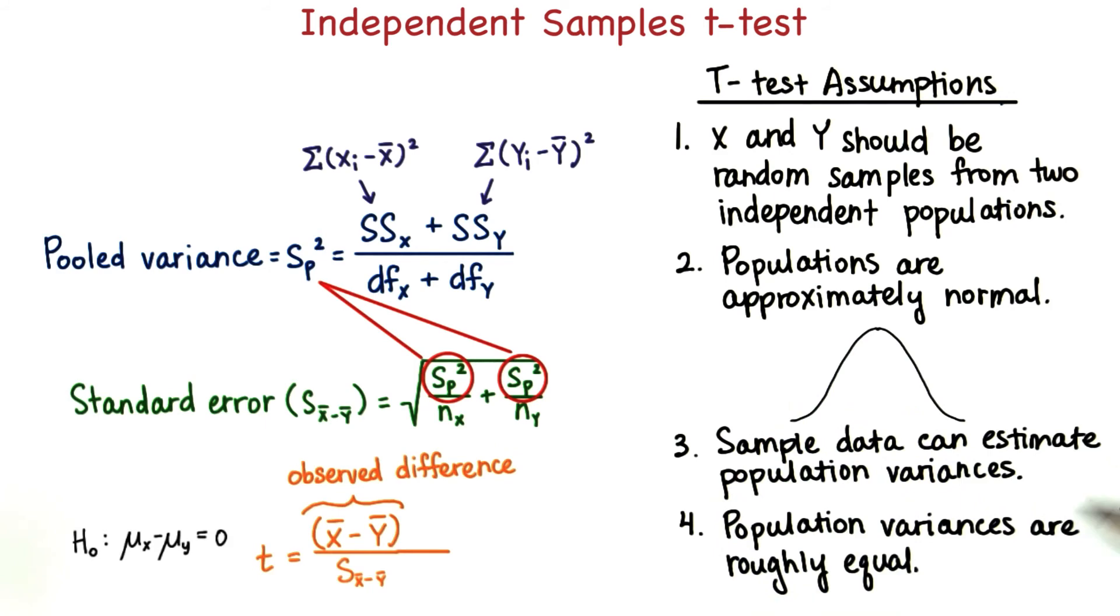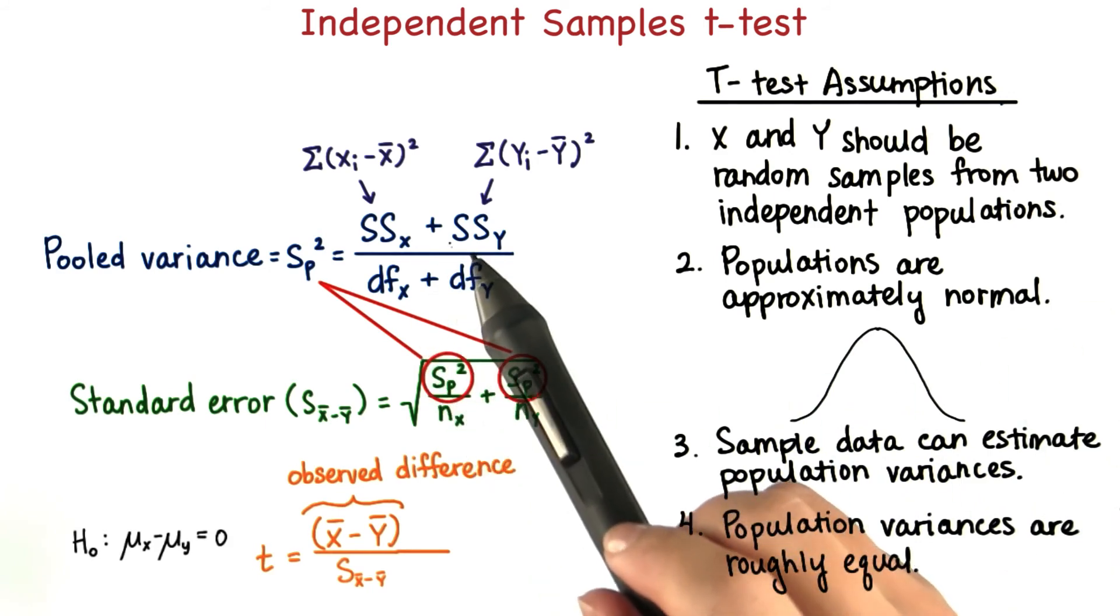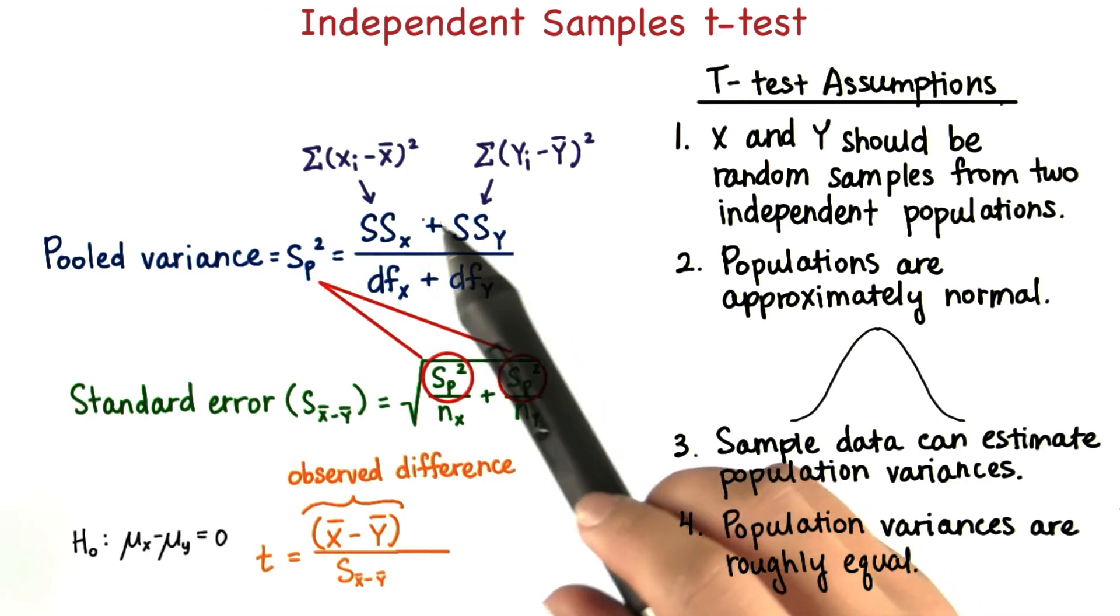And finally, the population variances should be roughly equal, allowing us to use this pooled variance as an estimate of both.